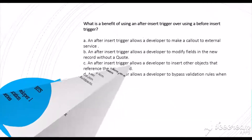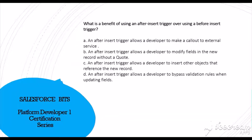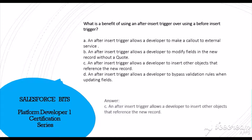What is the benefit of using an after insert trigger over a before insert trigger? The correct answer is C: an after insert trigger allows a developer to insert other objects that reference the new record. This is important — if you want to reference the new record which has been inserted, you use after insert. You cannot bypass validation rules naturally without custom settings, so D is not correct.